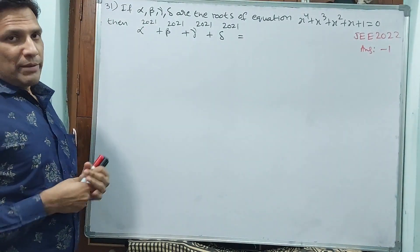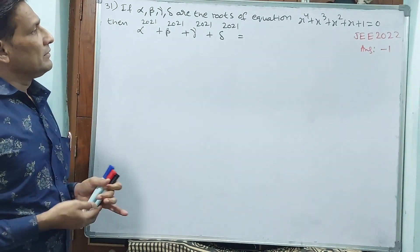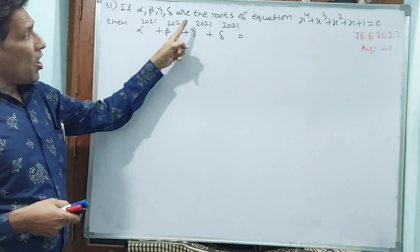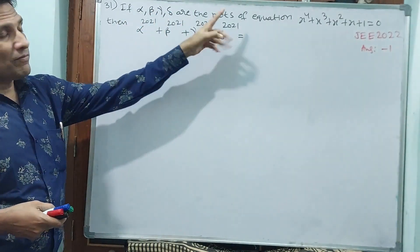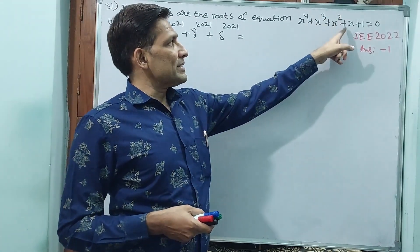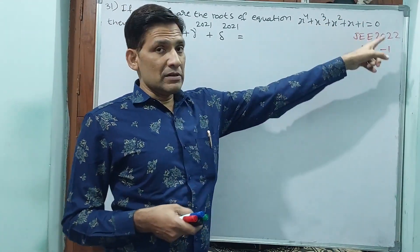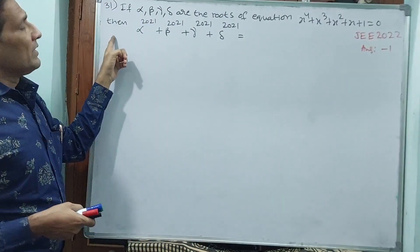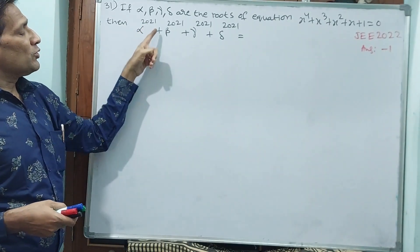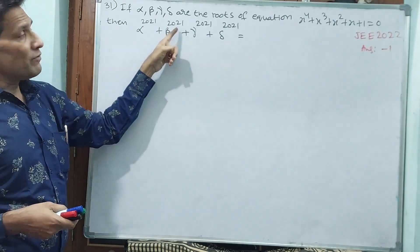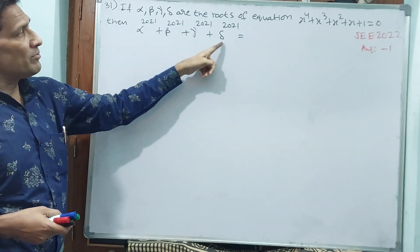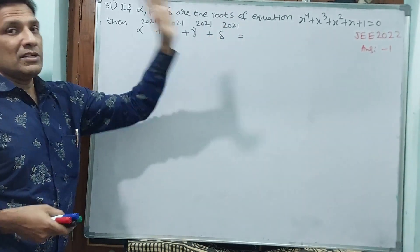See question number 31. If alpha, beta, gamma, delta are the roots of the equation x to the power of 4 plus x cube plus x square plus x plus 1 equal to 0, then what is the value of alpha to the power of 2021 plus beta to the power of 2021 plus gamma to the power of 2021 plus delta to the power of 2021?